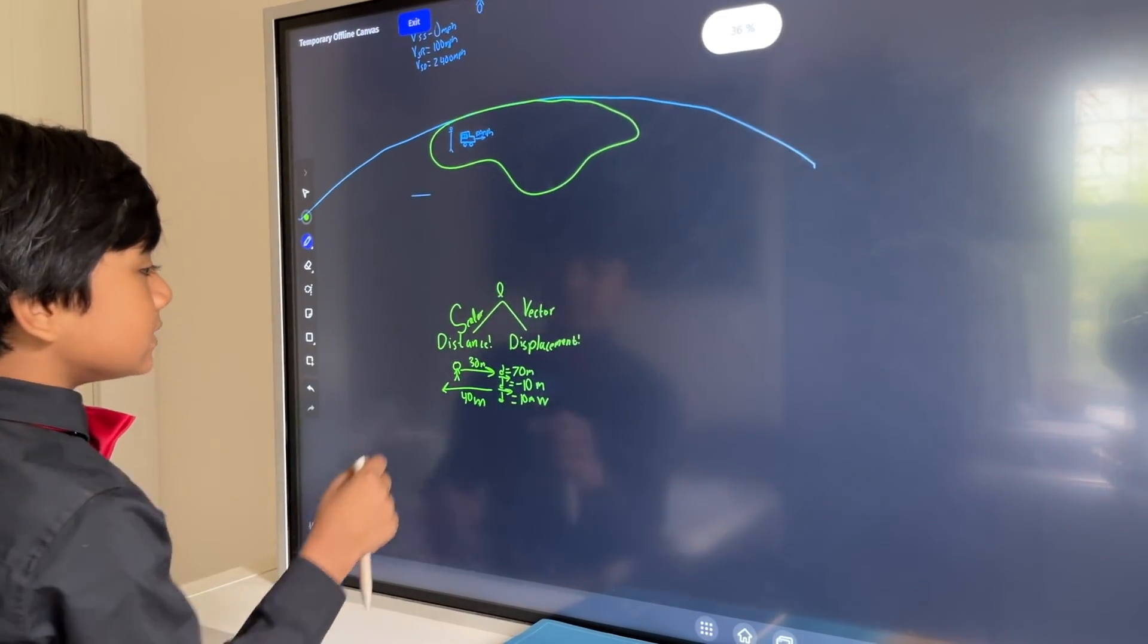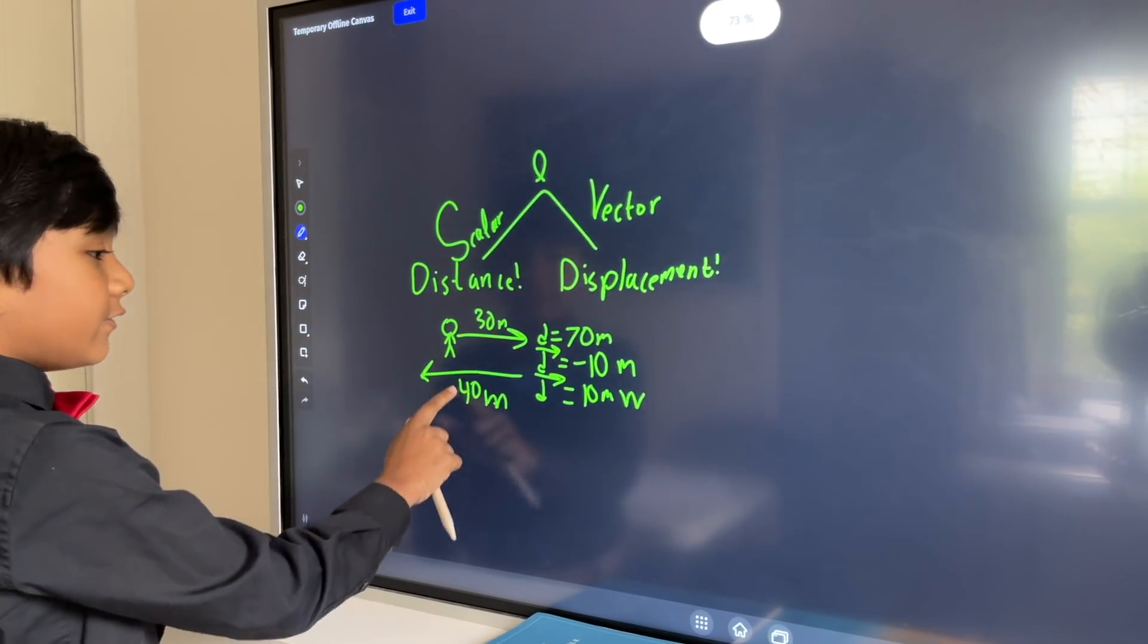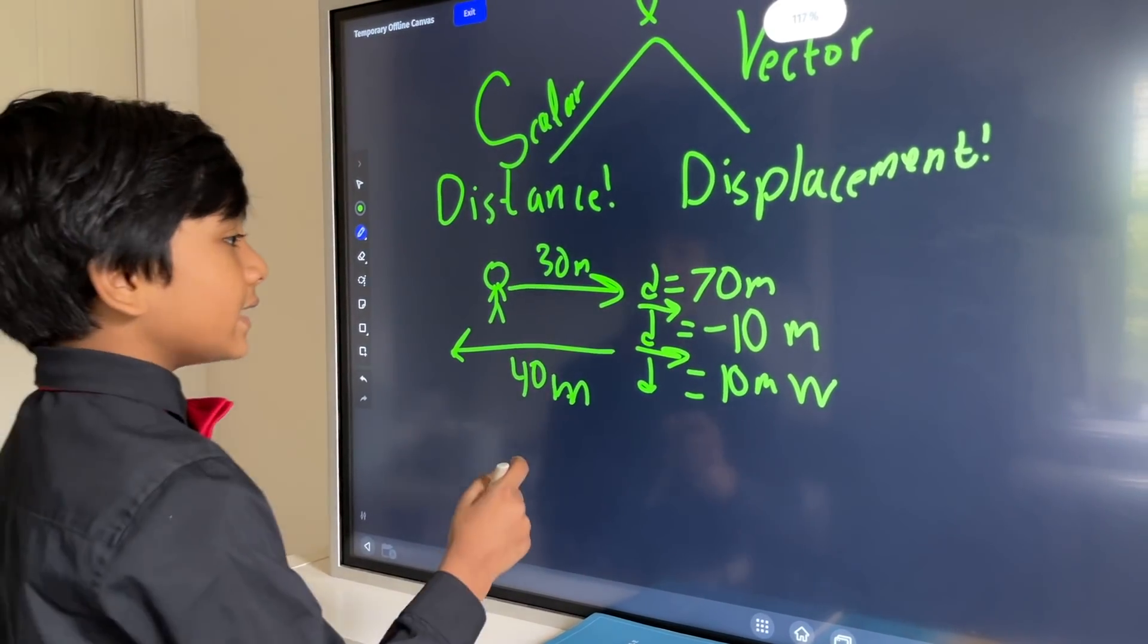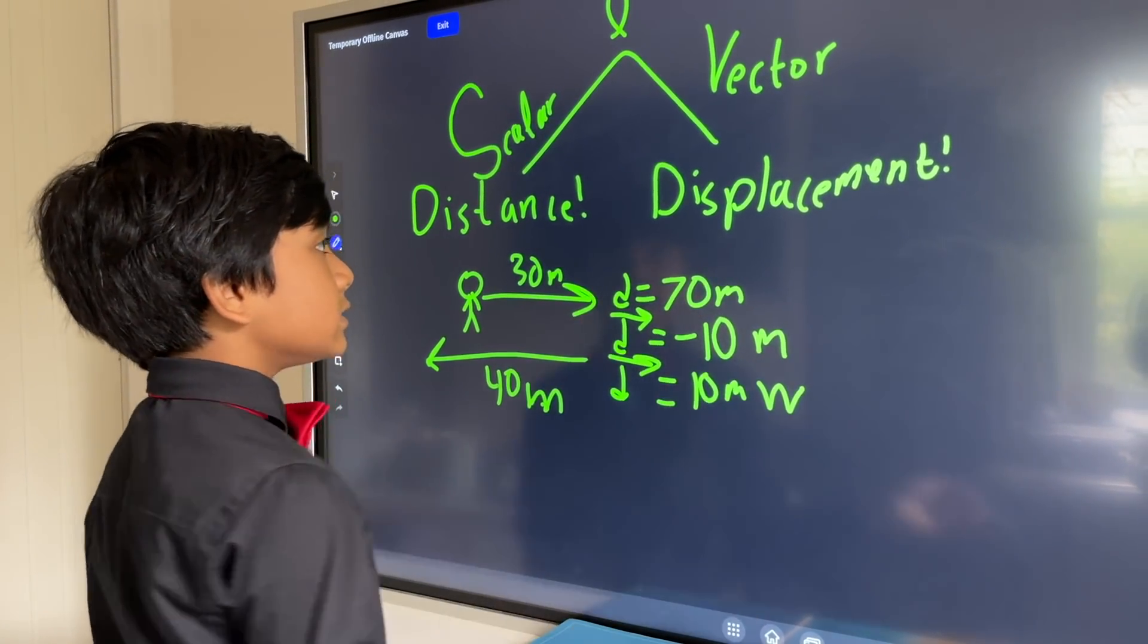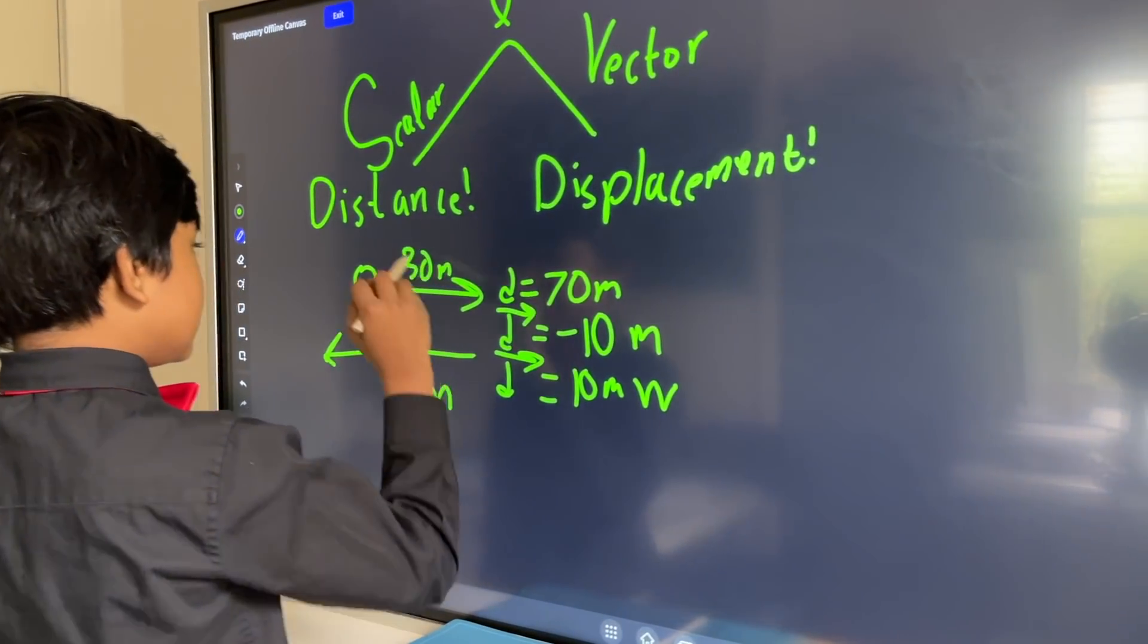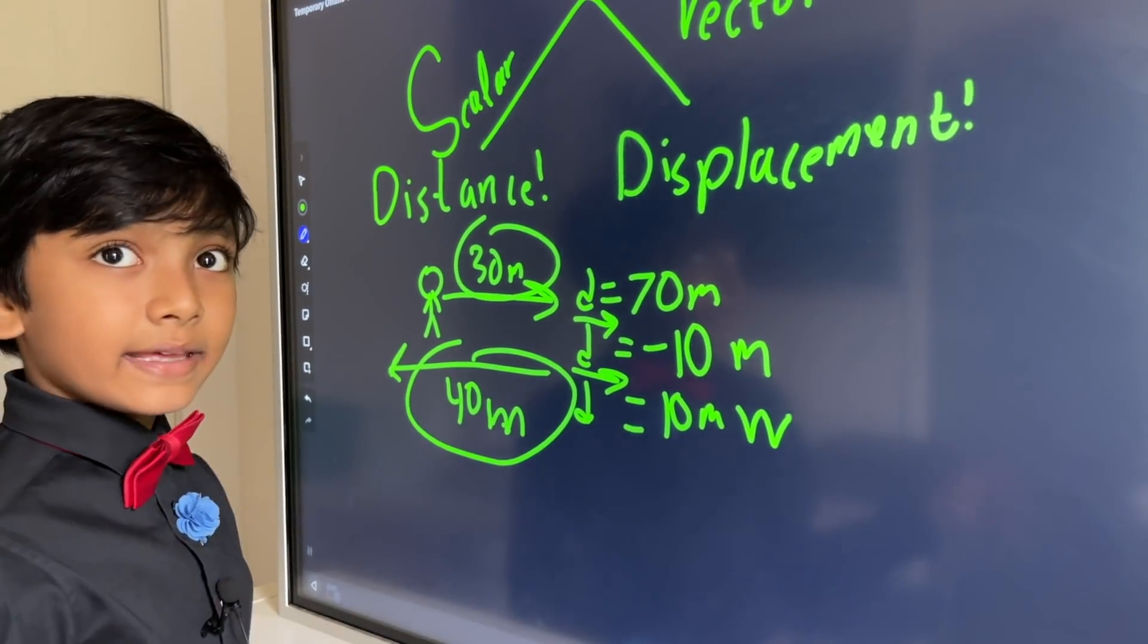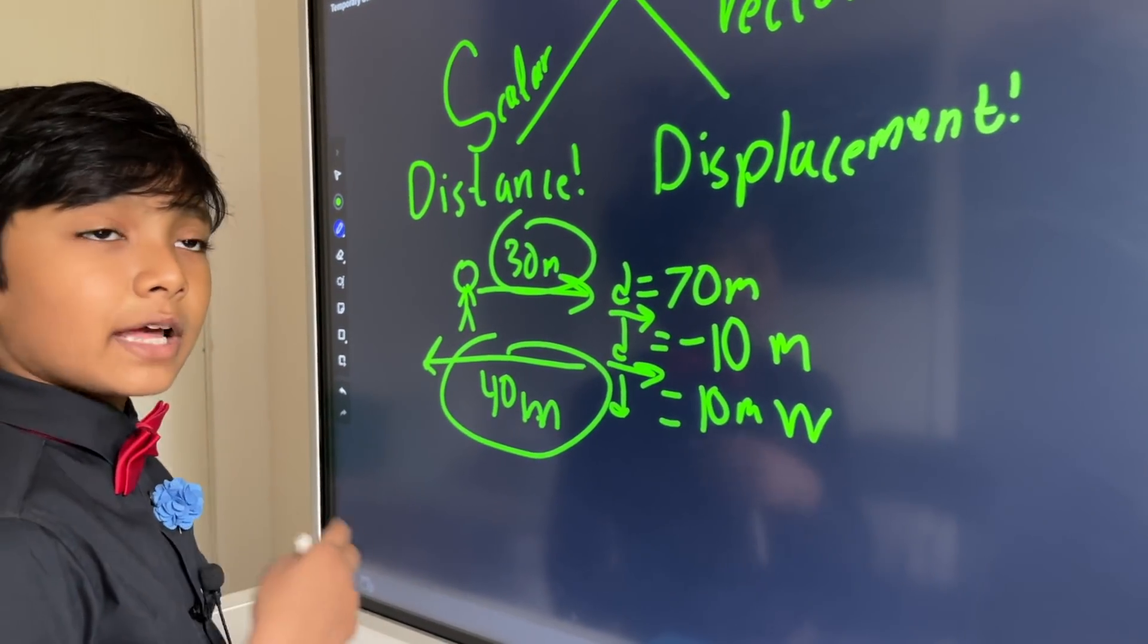This is the difference between scalar versus vector. I mean displacement versus distance. You can see that distance is clearly a scalar because they don't care about which direction it is. Well, this displacement clearly cares about which direction you're going.